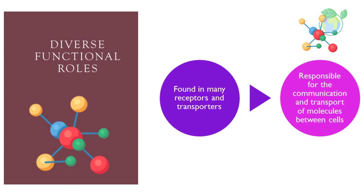Beta-barrel proteins are also found in many receptors and transporters, which are responsible for the communication and transport of molecules between cells. For example, the beta-2 adrenergic receptor is a beta-barrel protein that plays a key role in the regulation of the cardiovascular system. When a hormone called epinephrine binds to the receptor, it triggers a series of biochemical reactions that ultimately result in the dilation of blood vessels and an increase in heart rate.